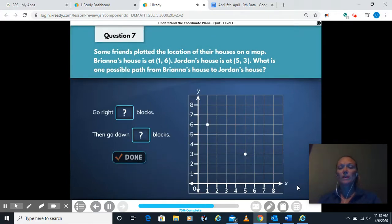Some friends plotted the location of their houses on a map. Brianna's house is at 1, 6. So here's Brianna's house. Jordan's house is over here at 5, 3. What is one possible path from Brianna's house to Jordan's? So we're going to go right how many blocks?